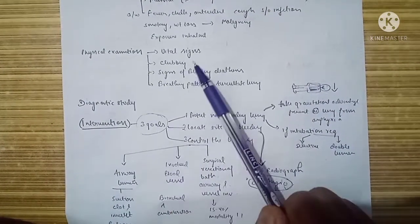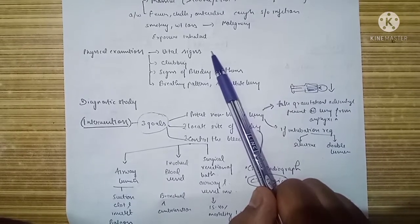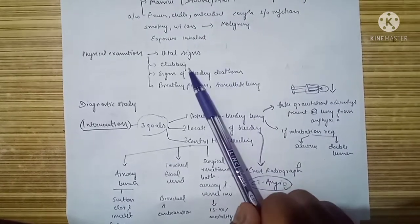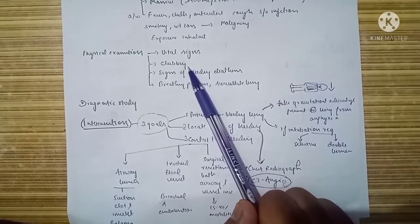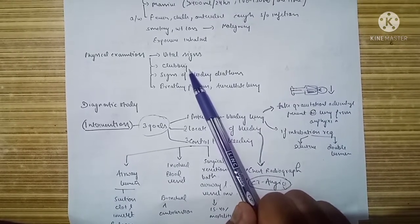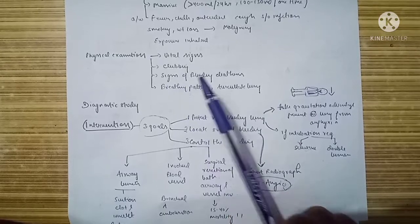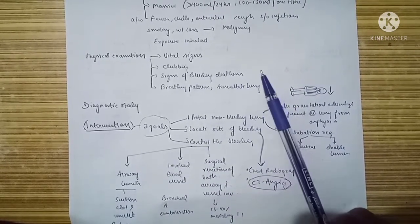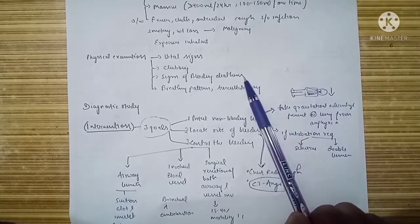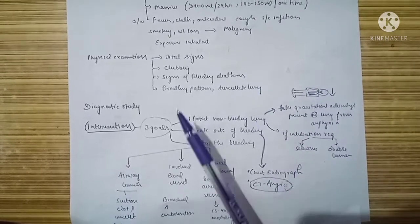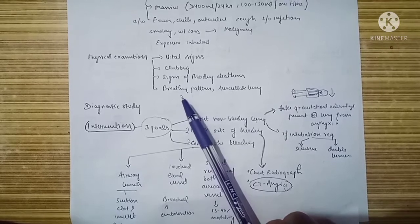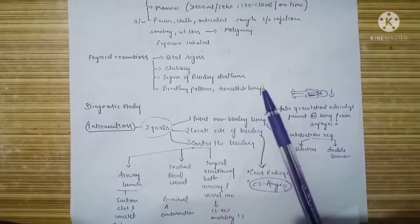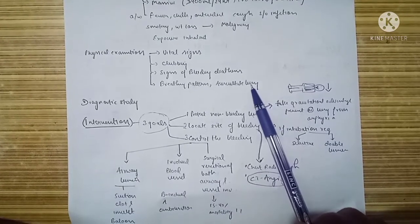On physical examination, look at the vital signs and specifically look for tachycardia or tachypnea, as these may be warning signs. Clubbing may be seen in bronchogenic carcinoma, a common cause of hemoptysis. Signs of bleeding diathesis — including petechiae, purpura, and ecchymosis — should be assessed to rule out blood dyscrasias. Breathing pattern for any hyperpnea or apnea should be evaluated, and the lungs should be auscultated for any abnormal breath sounds.